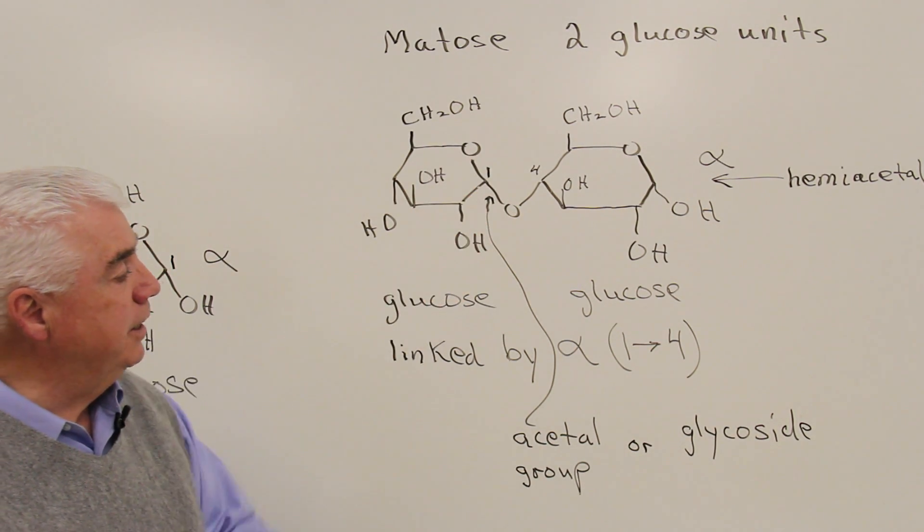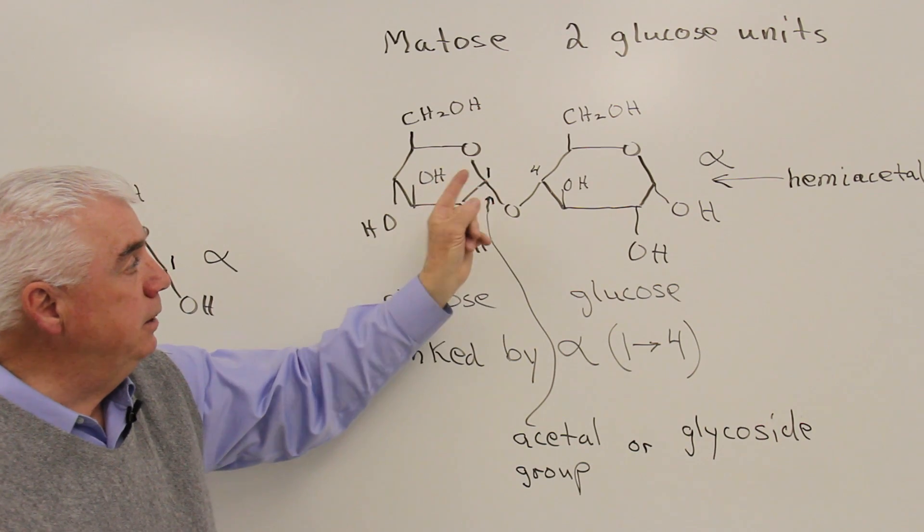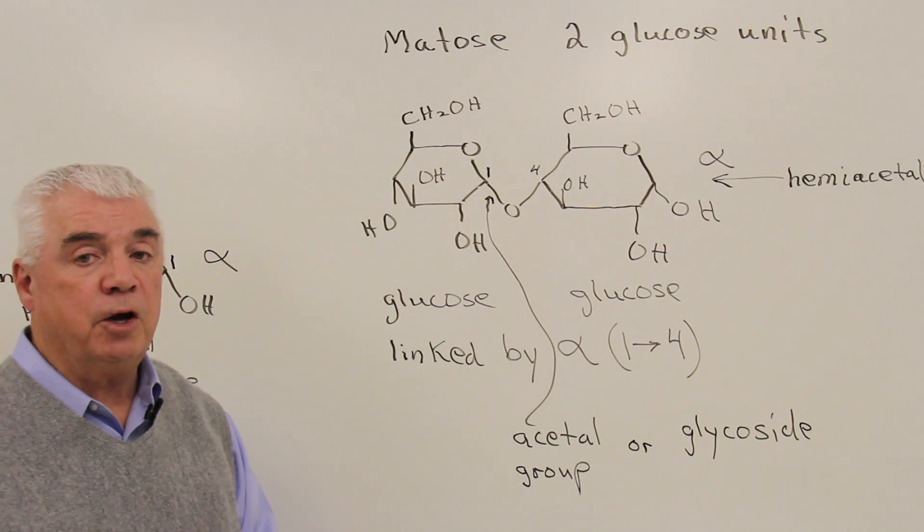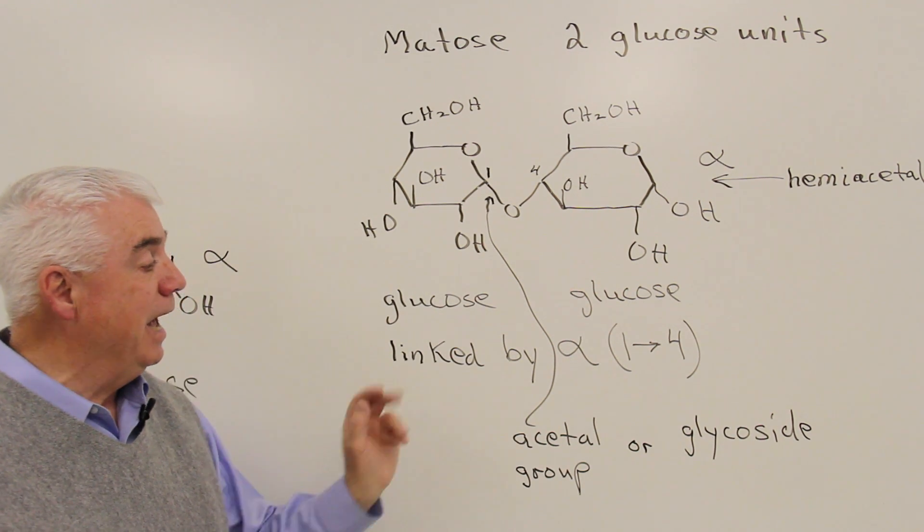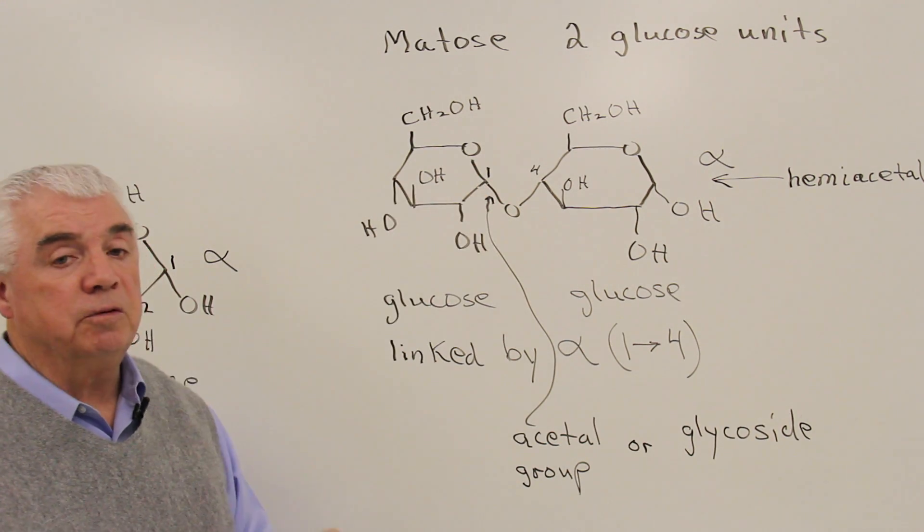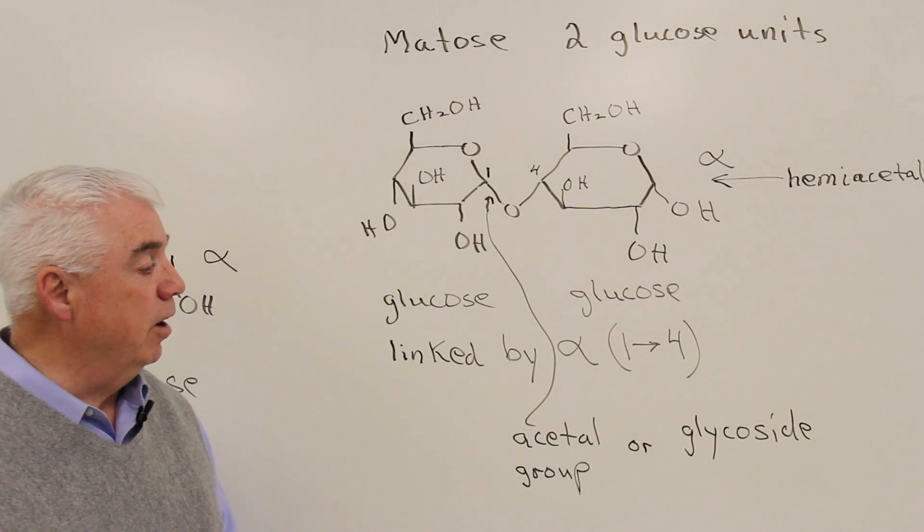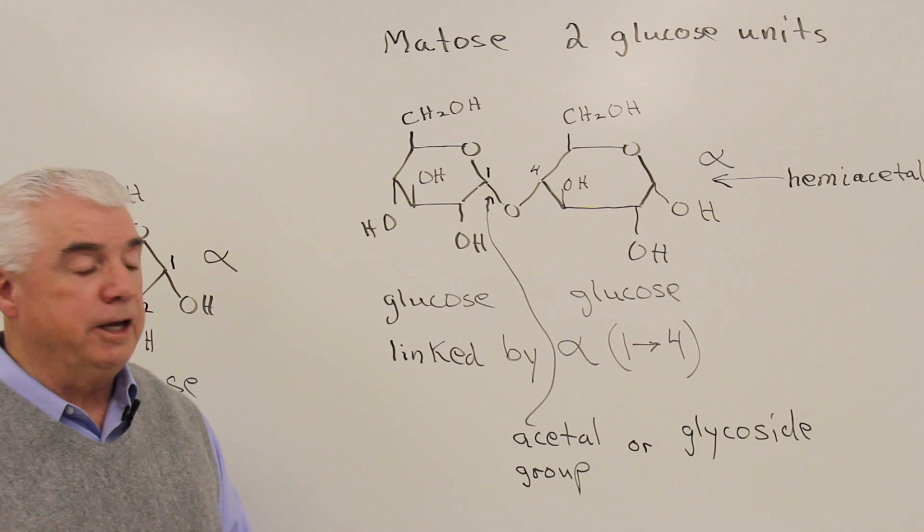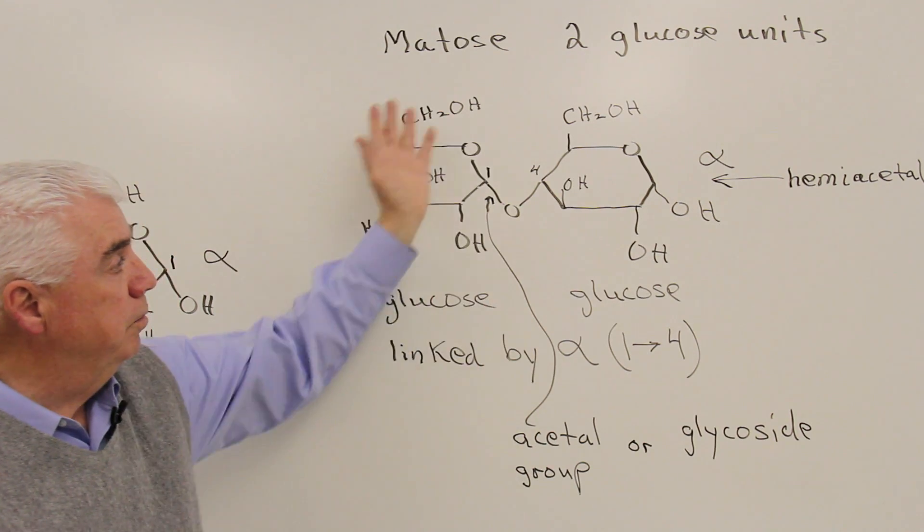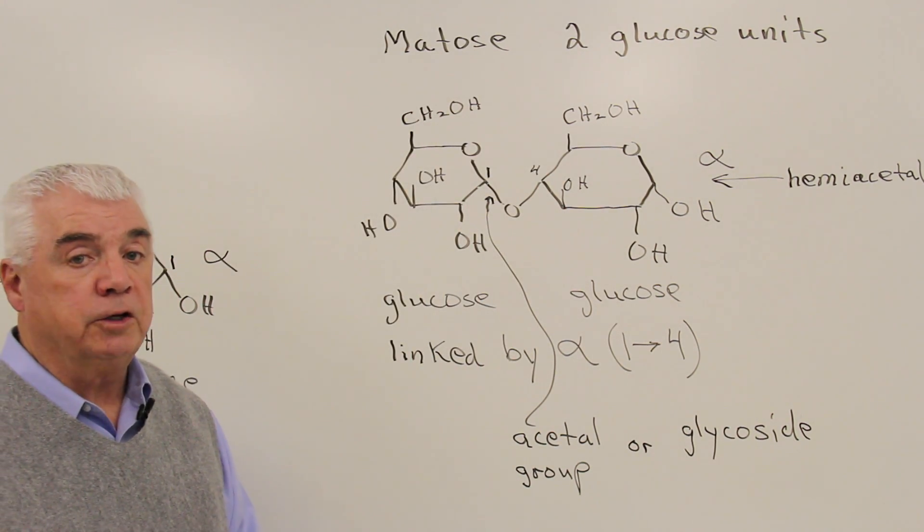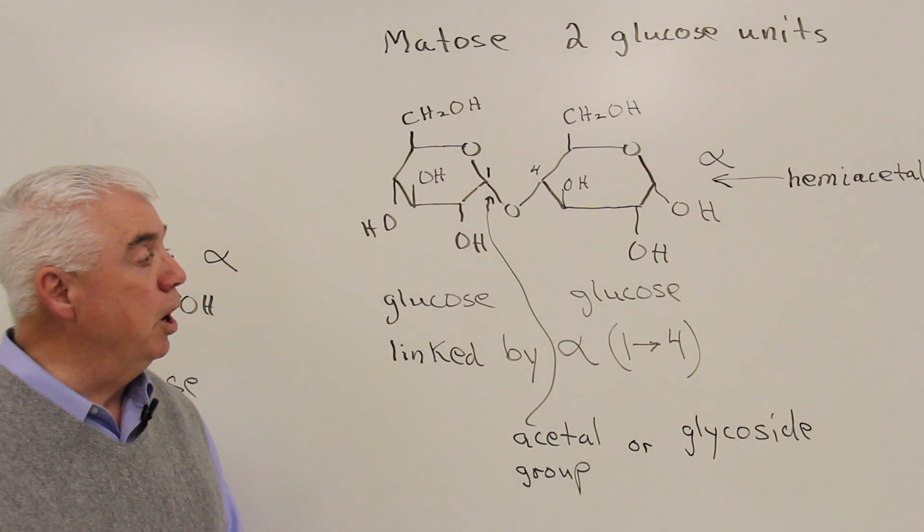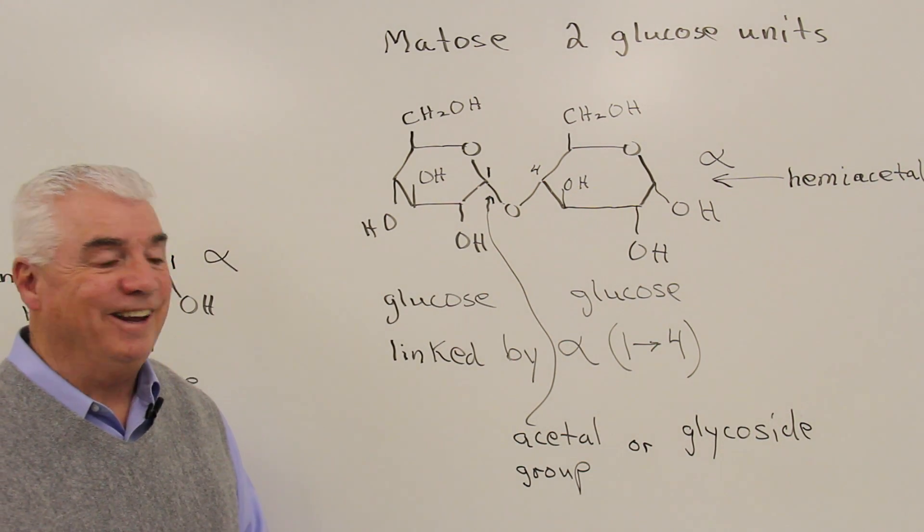This functional group back here on the left, well, here's our carbon. There's a hydrogen that we haven't shown. Two oxygens attached to this carbon. It's an acetal. And acetals are a lot more stable than a hemiacetal. So this isn't breaking and opening. It's fixed right there. In carbohydrate chemistry, there's another name for an acetal group. It's called a glycoside. So this is an example of a glycoside. Or sometimes we point to that specific bond, that carbon-oxygen bond, and call it a glycosidic linkage.